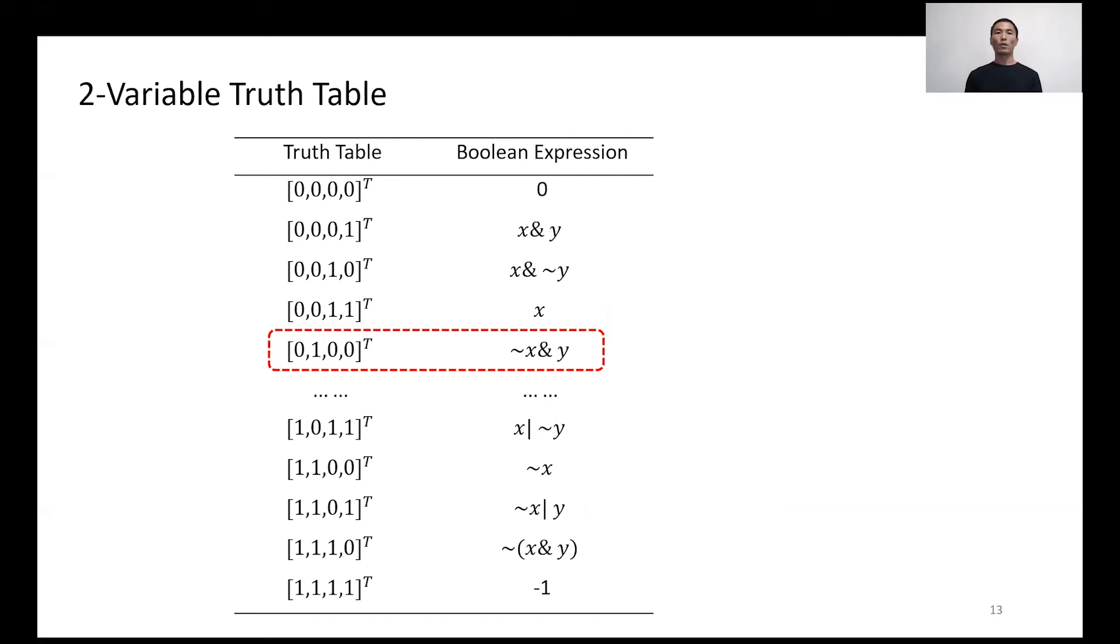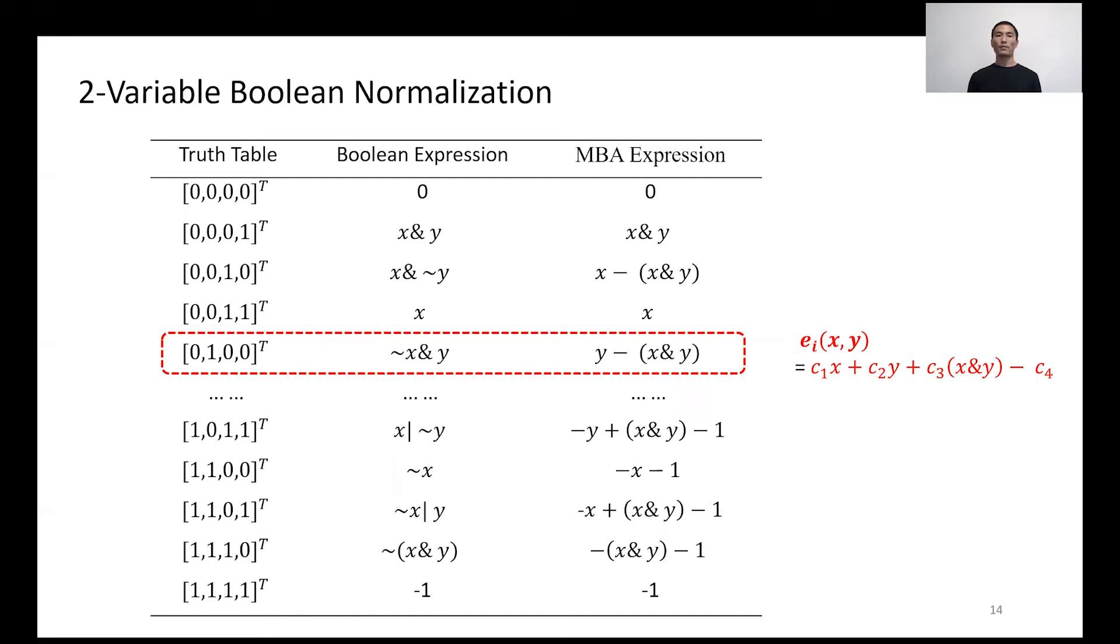Two-variable truth tables have 16 different cases as shown in the table. The fourth column presents the truth tables as a four-tuple binary vector. For example, the truth table of NOT X AND Y is shown.